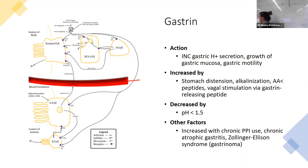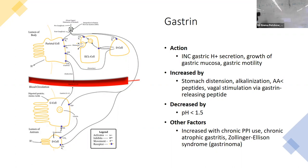Chronic atrophic gastritis also increases gastrin because the body's ability to be acidic and absorb is decreased, so it tries harder by increasing gastrin production. Zollinger-Ellison syndrome, or gastrinoma, is where we see a really high elevation in gastrin itself — it doesn't necessarily mean the stomach gets highly acidic, but gastrin is elevated in these conditions.